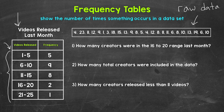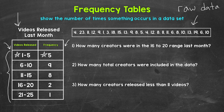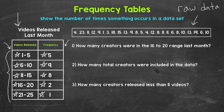The right column is the frequency — the number of times values in our data fall within each group. Reading the table: how many creators released 1 to 5 videos? 5 creators. 6 to 10 videos? 9 creators. 11 to 15 videos? 8 creators. 16 to 20 videos? 2 creators. And 21 to 25 videos? 1 creator. So you can see this frequency table really helps organize and present the data in a more meaningful and easier way than looking at raw data.